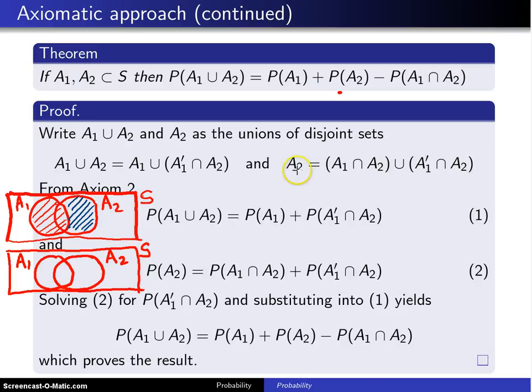Here is the set A2. And in this case we are writing A2 as the intersection of A1 and A2, and that is right here. Union with A prime intersect A2, and I'll go back to blue once again. And that will be this same area right here.